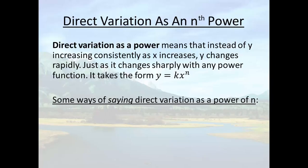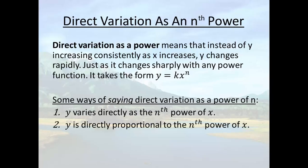And the ways that you express direct variation as a power of n are real similar to the ones that we just had. You can say that y varies directly as the nth power of x. You can say that y is directly proportional to the nth power of x. You can say that y equals kx to the n for some non-zero constant k. So all three of those are very, very similar to what we just did.